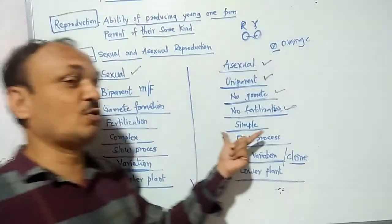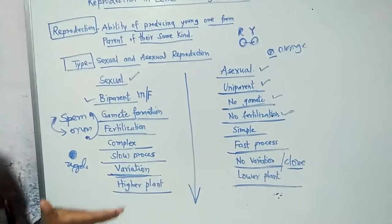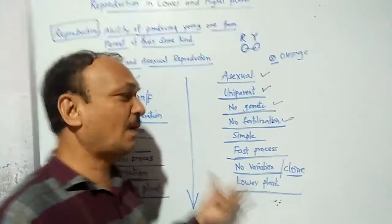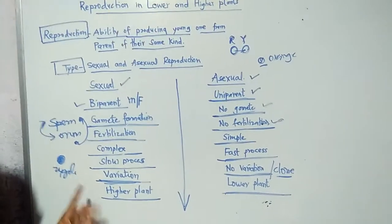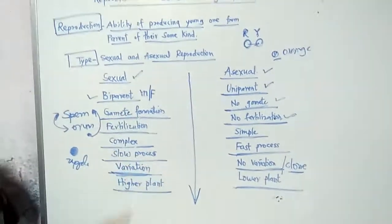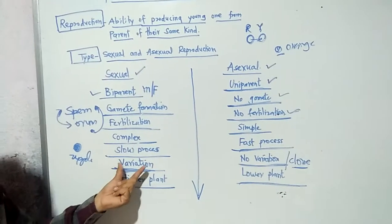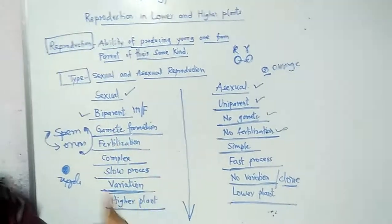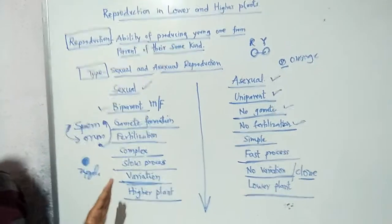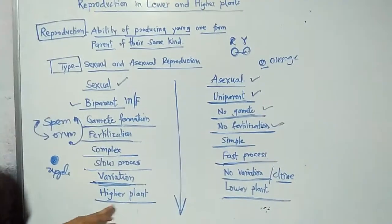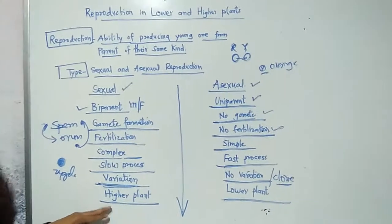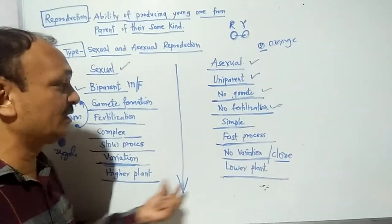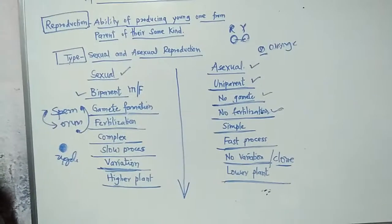Sexual reproduction is a very complex process, while asexual reproduction is not complex. Sexual reproduction is a slow process — step by step, each reaction coming one after another. Asexual is comparatively fast and grows faster. Variation is very important and connected to hybridization. Variation occurs only in sexual reproduction; there is no variation in asexual reproduction — it is just a copy of the primitive plant. Sexual reproduction is found majorly in higher plants, whereas lower plants show asexual reproduction.